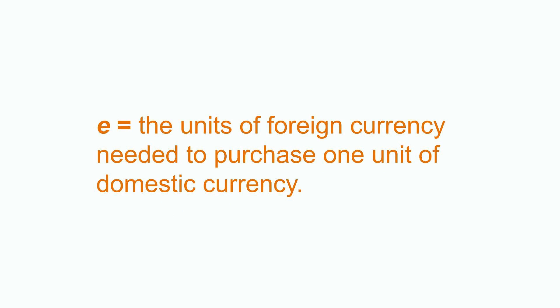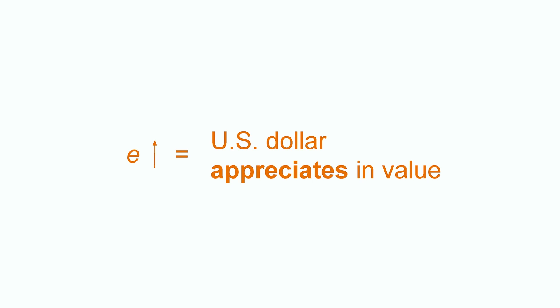In this video, I will be consistent with the definition used in your textbook and define nominal exchange rate E as units of foreign currency needed to purchase 1 unit of domestic currency, with the US dollar as the domestic currency. Given this definition of nominal exchange rate E, when E increases, we say that the US dollar has appreciated in value. If E equals 100 to start with, a higher E means that it takes more than 100 yen to exchange for 1 US dollar. So the US dollar is worth more than before.